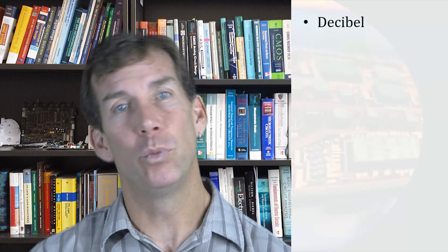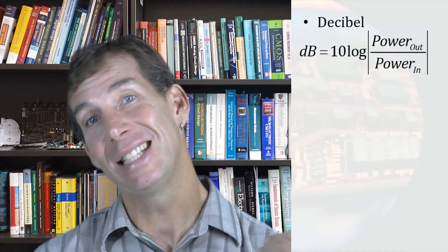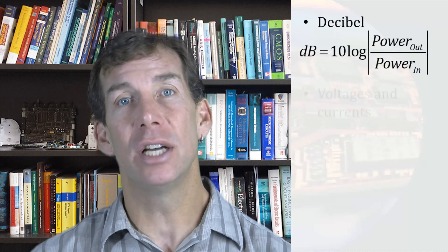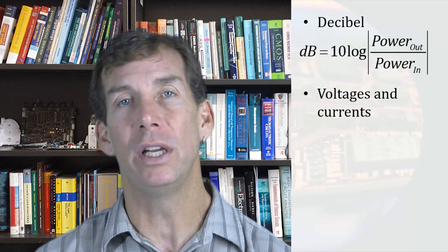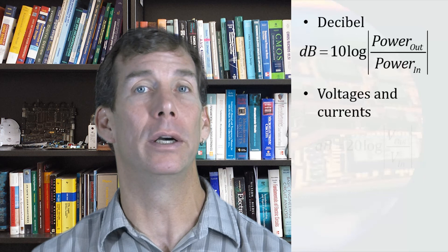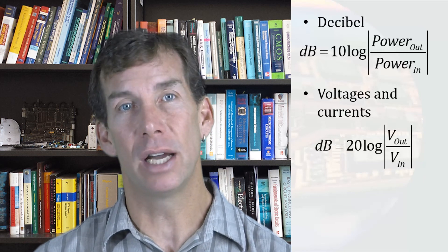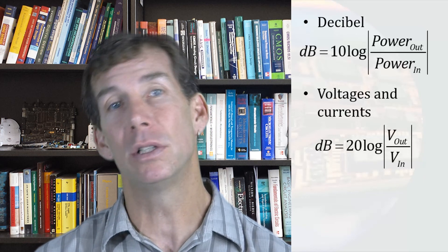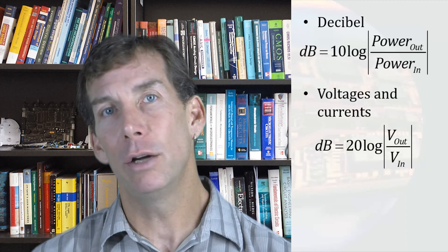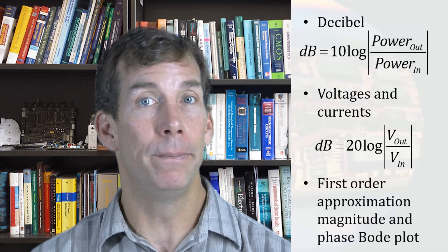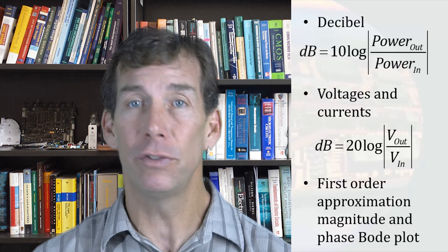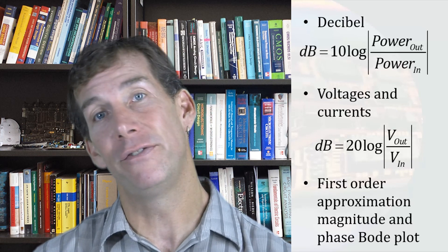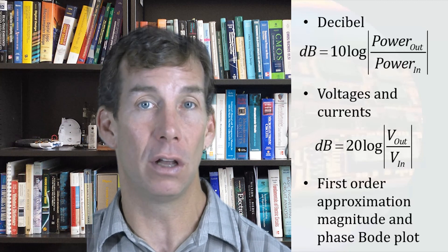Today we have looked at a first order approximation of a Bode plot. We started by defining decibels as 10 times the log of a ratio of power gain. We then adjusted the decibel calculation to account for the squared relationships between voltage or current and power. This resulted in the decibel calculation based on voltage or current being multiplied by a factor of 2. We then applied the decibel calculation to a transfer function and drew a first order graph of the decibel magnitude versus the log of angular frequency and a first order plot of the phase shift as a function of the log of frequency. These were called Bode plots.